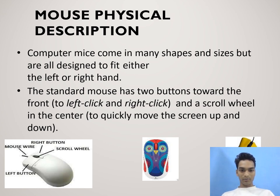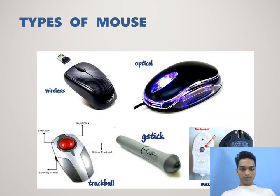Buttons are all designed to fit either the left or right hand. The standard mouse has two buttons towards the front — to left click and right click — and a scroll wheel in the center to quickly move the screen up and down. Types of mouse include: wireless, optical, G-stick, trackball, and mechanical.